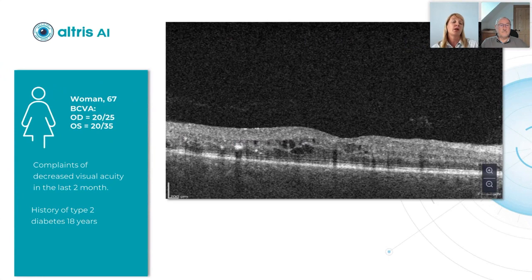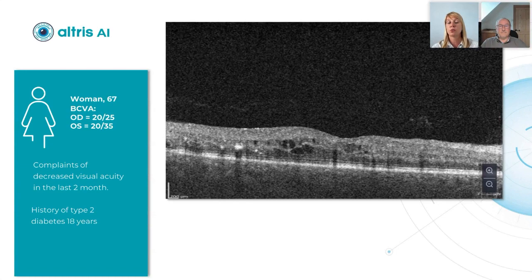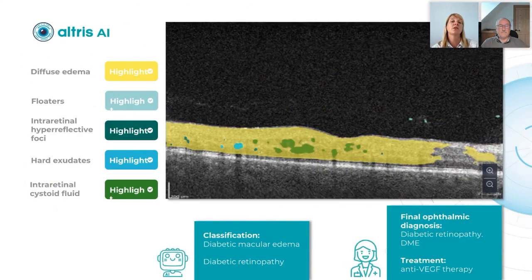One more case: a 67-year-old woman with complaints of decreased visual acuity during the last two months. She had a history of type 2 diabetes for 18 years. You can see that the retina is damaged from her OCT exam. Biomarkers detected included diffuse edema, floaters, intraretinal hyperreflective foci, and hard exudates.